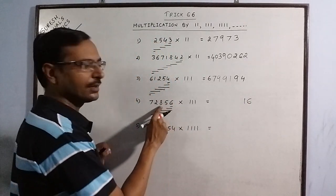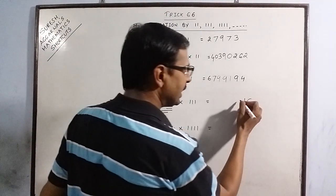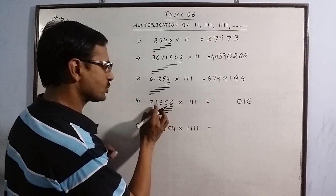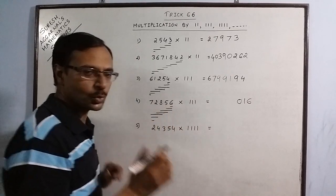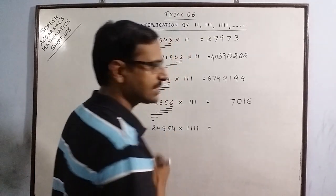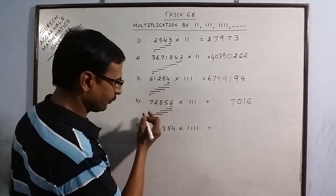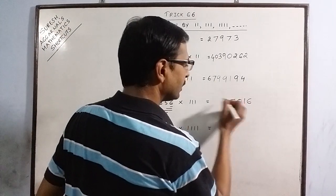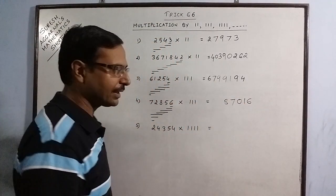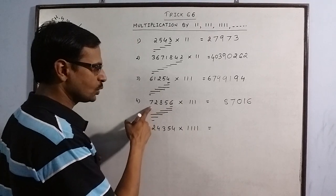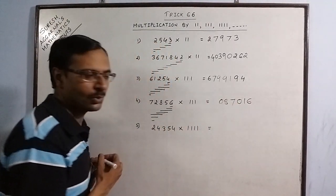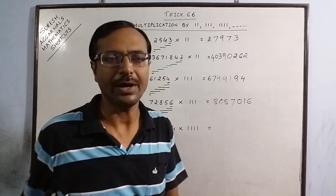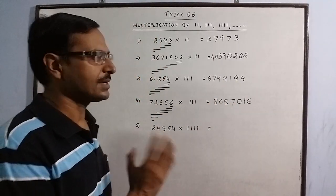11 plus 8, 19 plus 1 carry 20. Remember 2. 8 plus 5, 13 plus 2, 15 plus 2 carry 17. 7, 1 carry. Move further. 8 plus 2, 10 plus 7, 17 plus 1 carry 18. 1 carry 18. So your answer is 808, 7016.